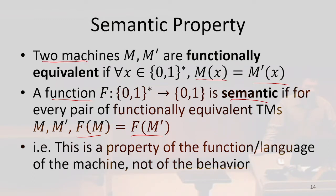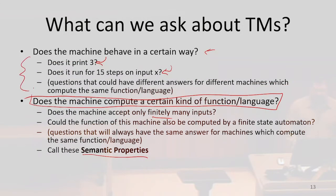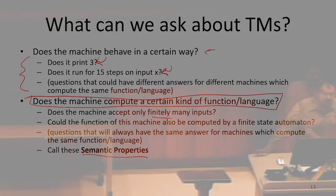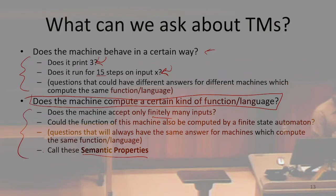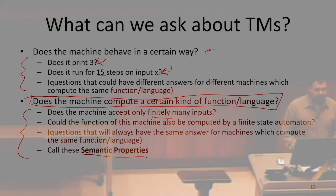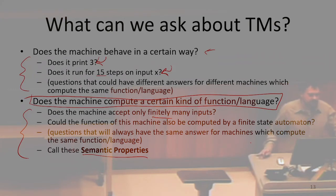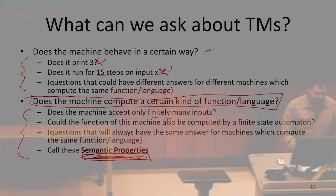A property is semantic if it does the same thing for two inputs that are functionally equivalent — we're only asking about input-output behavior. The non-semantic examples are not semantic because two programs computing the same function may or may not print 3; some might run for 15 steps on input x, some might not. But for semantic properties, if two machines compute the same function and I ask 'does it accept 10?', the answer is the same for both. Any property that is the same for functionally equivalent machines is a semantic property.